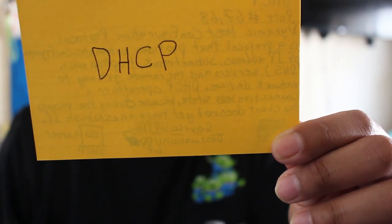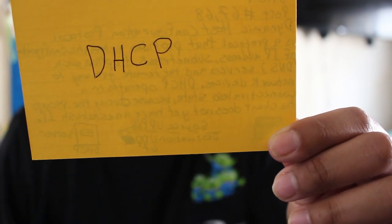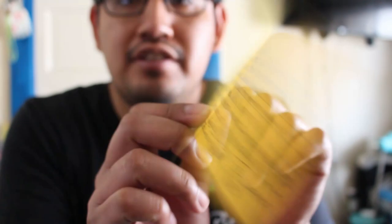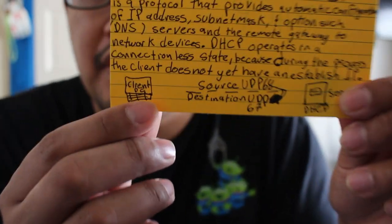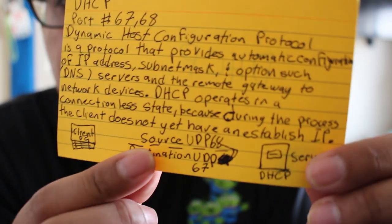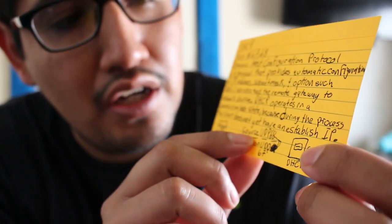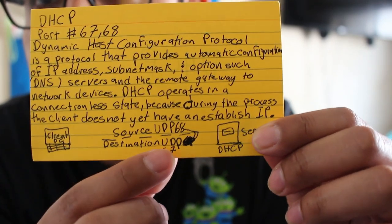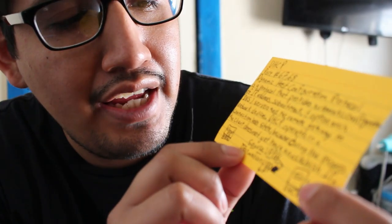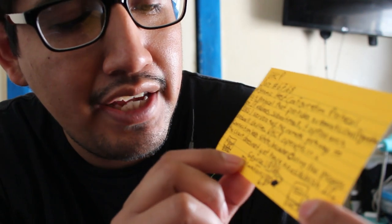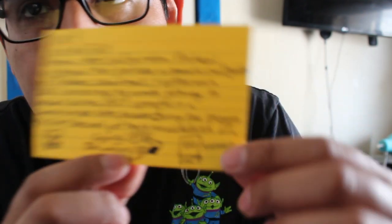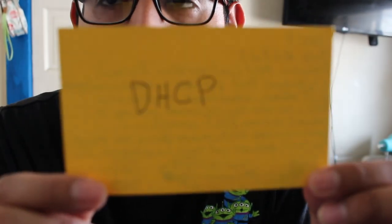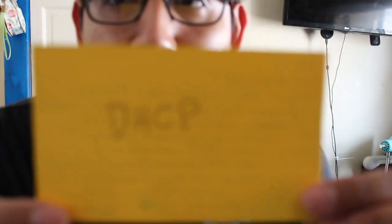DHCP operates in a connectionless state because during the process the client does not yet have an established IP. The source UDP is at port 68 and the destination is port 67. Remember port 67 and 68 for DHCP.